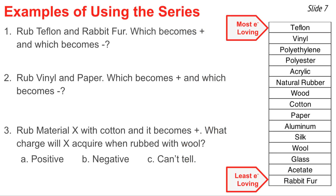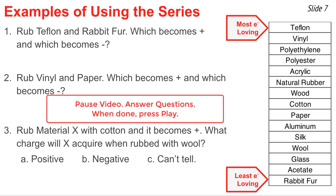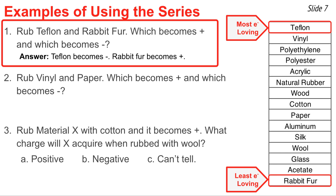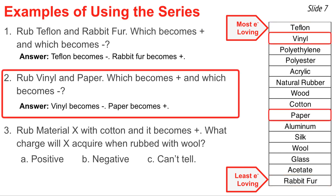Here are three practice questions — let's see if you got this. Pause the video, use the table to answer the questions, and when ready, press play. If you take Teflon and rub it with rabbit fur, you'd expect the Teflon to be charged negatively and the rabbit fur positive, because Teflon is higher in the table and has a greater electron affinity — it pulls the electrons off the rabbit fur. The same reasoning tells you that vinyl would become charged negatively when rubbed with paper, since it's higher in the chart and pulls electrons off the paper, leaving the paper charged positively.